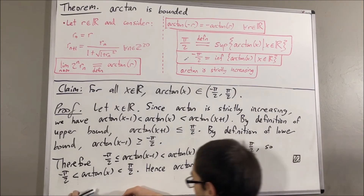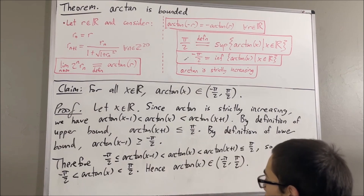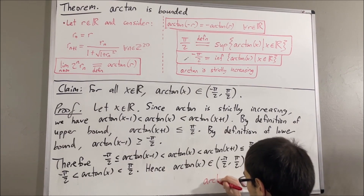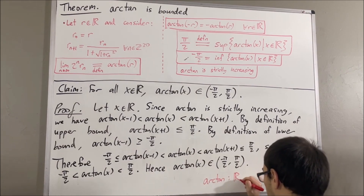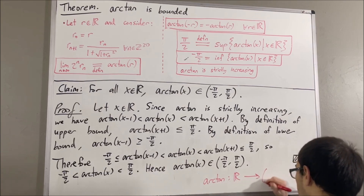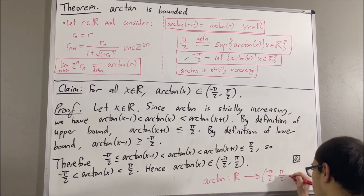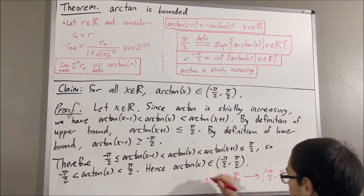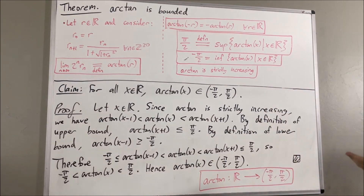In other words, what we now know is that the arctangent function is a function from the real numbers to the open interval negative pi over 2 to pi over 2. And so, that's pretty much it for this video.